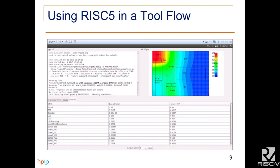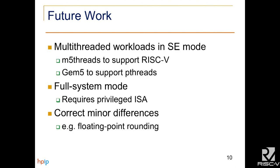I should note that GEM5 and all these tools actually run a lot slower than this — I had to cut a lot of waiting out to make it appear to run this fast. As I said, GEM5 only has limited support for RISC-V; right now it only supports single-threaded execution with system call emulation.